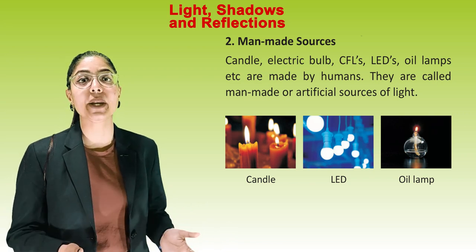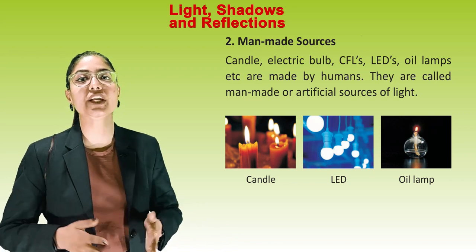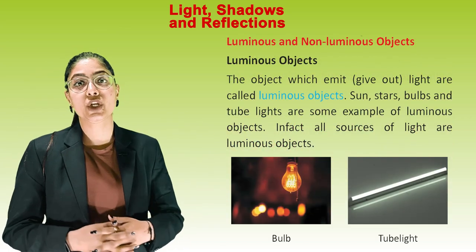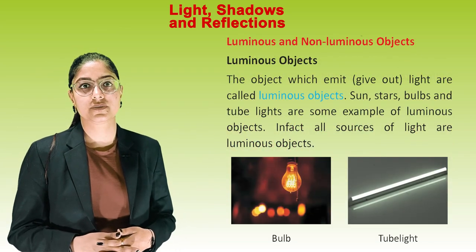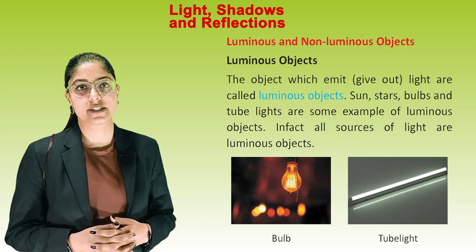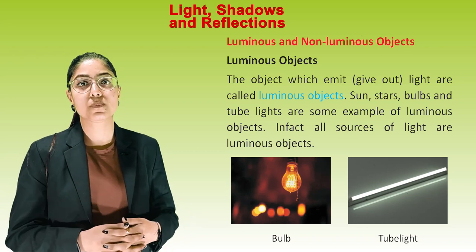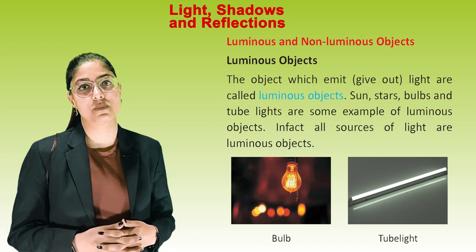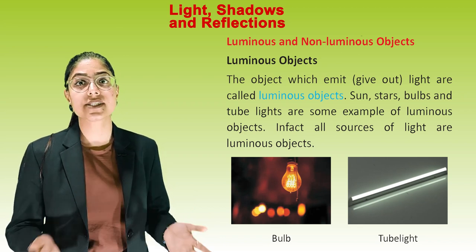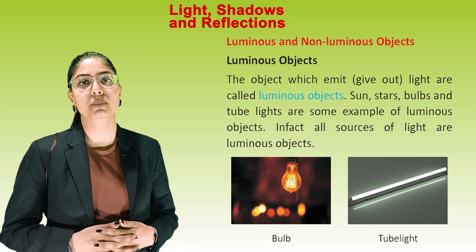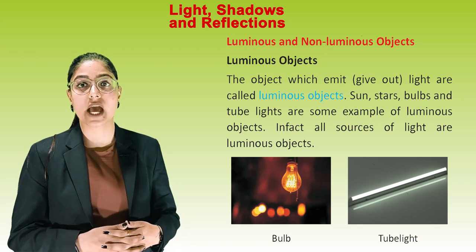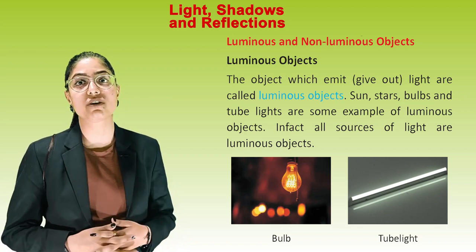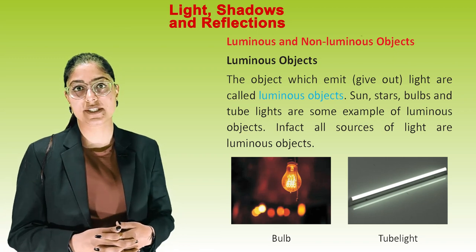They are called man-made or artificial sources of light. Luminous and non-luminous objects. Luminous objects are those which emit or give out light. Sun, stars, bulb, and tube light are some examples of luminous objects. In fact, all sources of light are luminous objects.